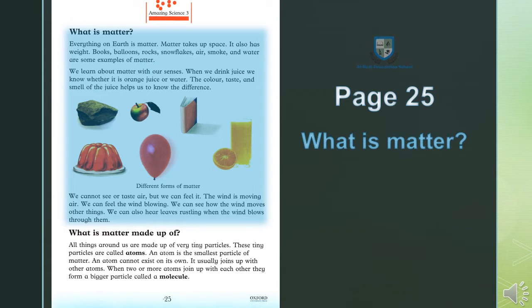What is Matter? Matter kya hai? Matter yani maada. Everything on earth is Matter. Zameen par mojood har cheez matter yani maada hai. Matter takes up space. Maada wo hai joh jaga gherta hai. It also has weight. Or iska wazan bhi hota hai. Yani ka her wo chiz jiska wazan hota hai or jisko hum kishi jaga par rakhein, to wo jaga gherti hai — space yani jaga leti hai. Matter gherlati hai.